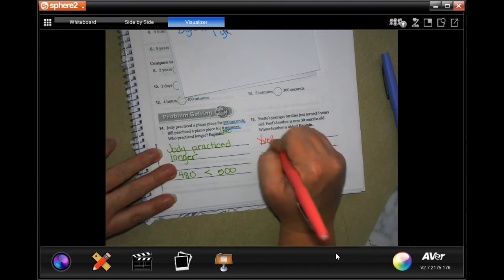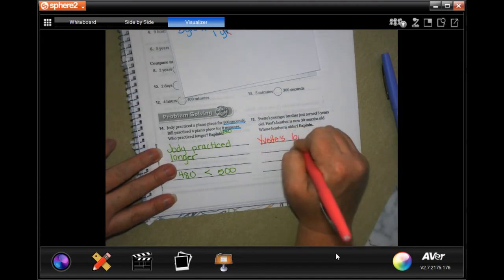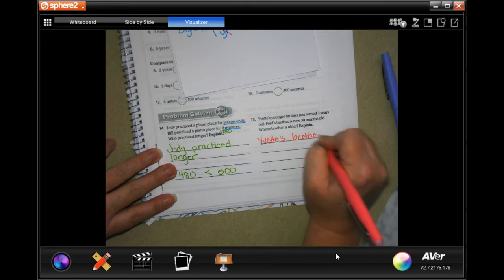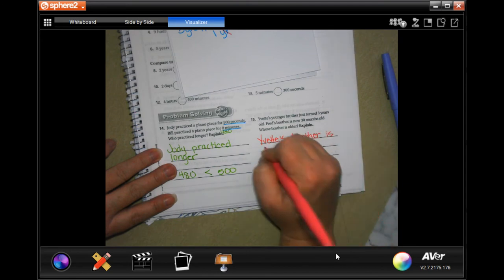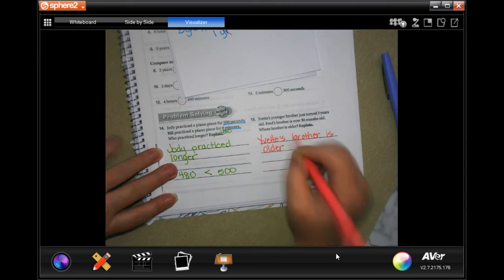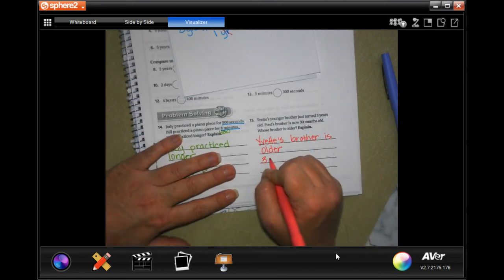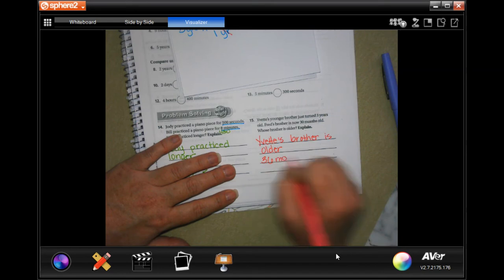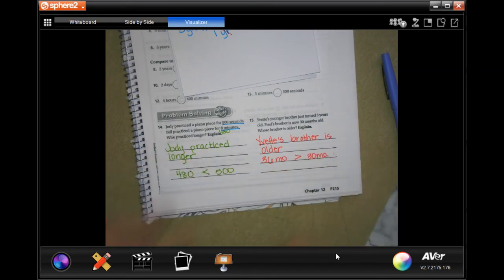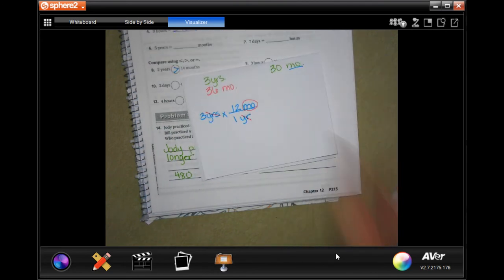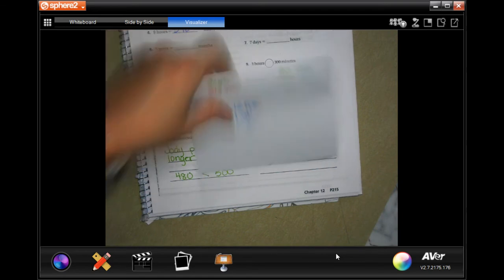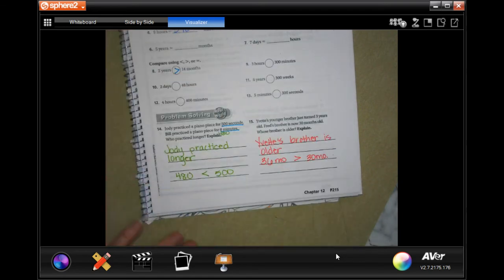So Yvette's brother is older because 36 months is bigger than 30 months, and that can be your explanation. Make sure you guys are showing your work though.